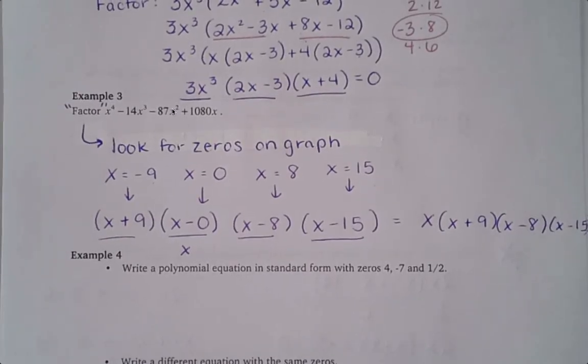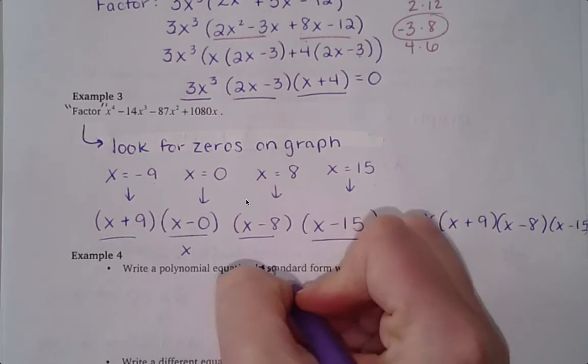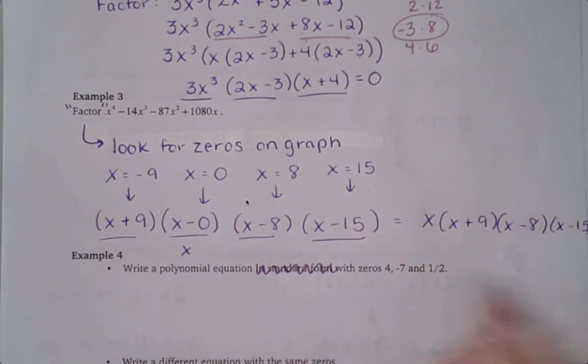So let's look at example four. Write a polynomial equation in standard form. I'm not going to worry about the standard form right now, actually. We'll talk about that when and if we need to. But I just want to focus on how do we write an equation with these zeros.